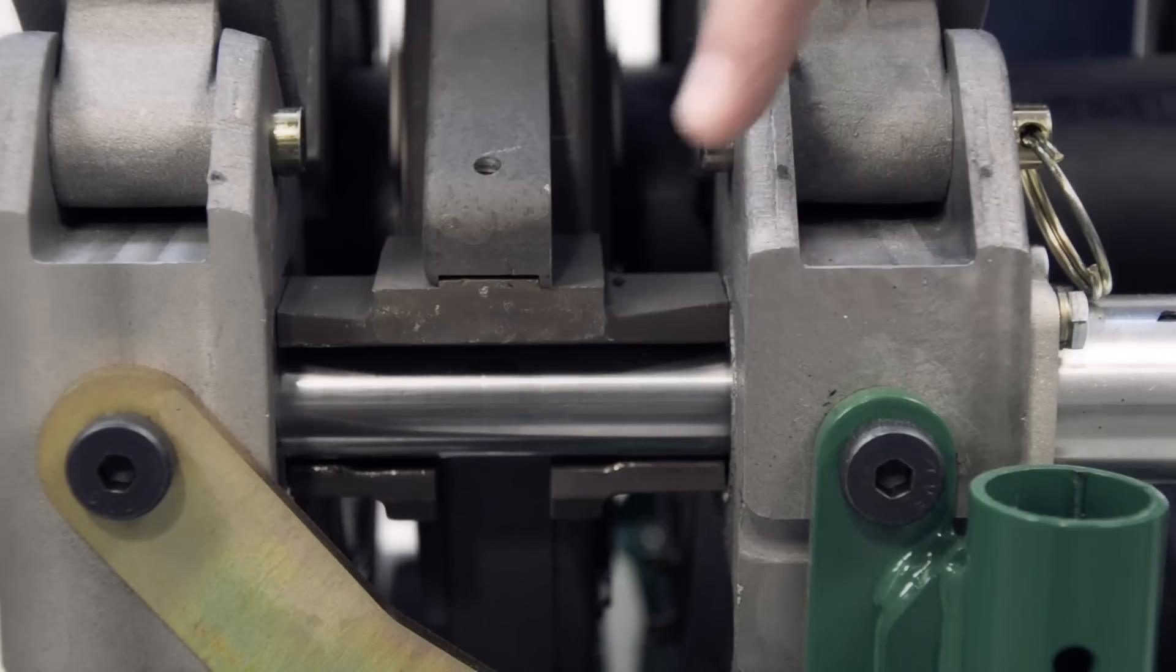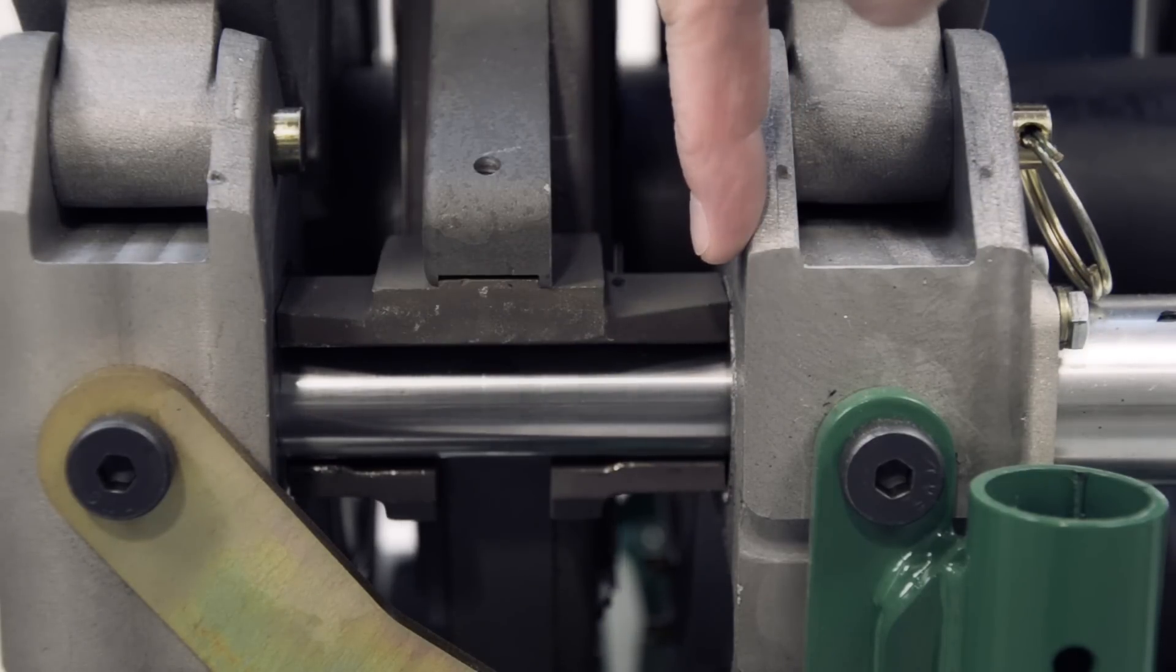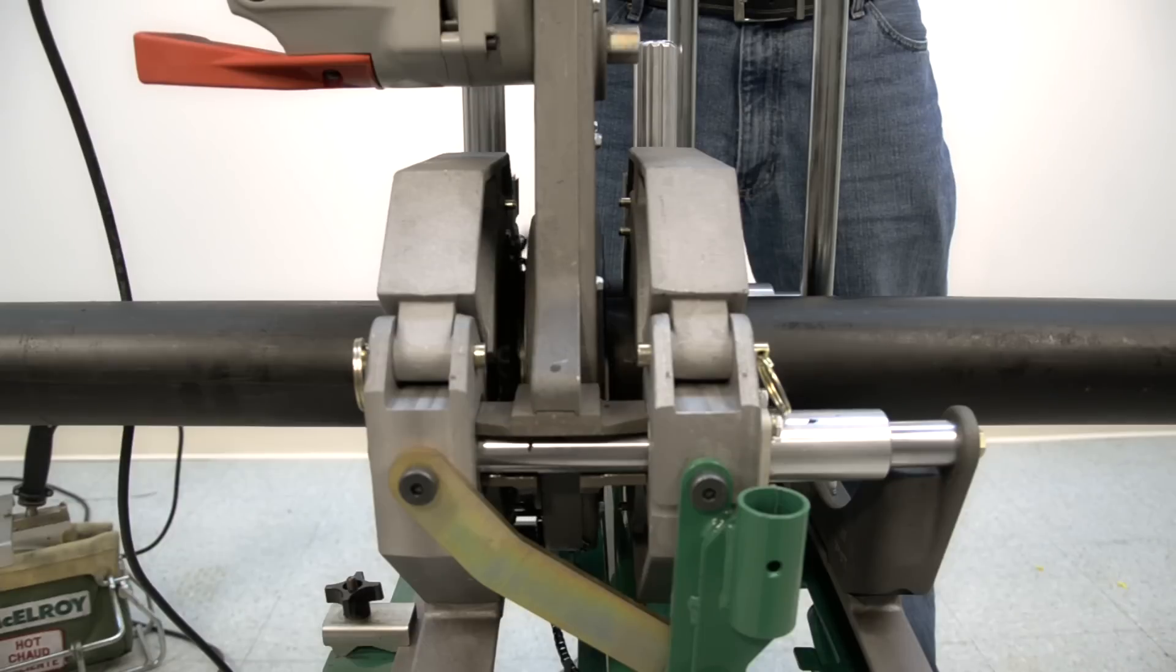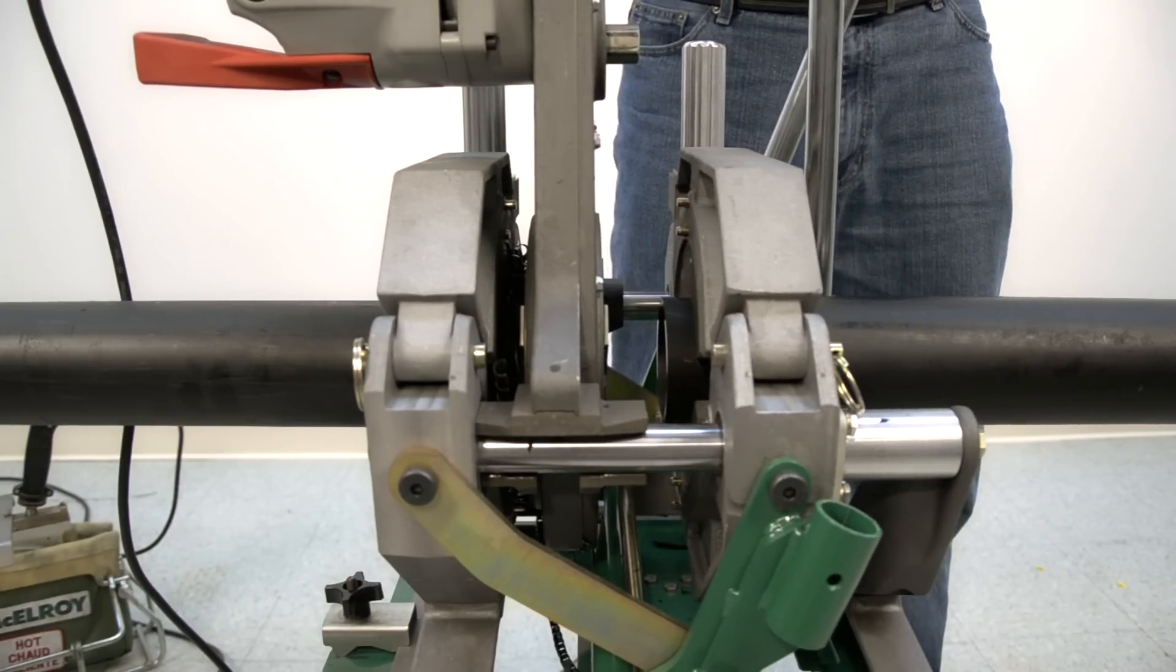Face all the way to the mechanical stops. This is until the jaws come in contact with the stops on the facer. With the jaws still against the stops, turn off the facer. Once the blades have stopped spinning, you may open the carriage and remove the facer.